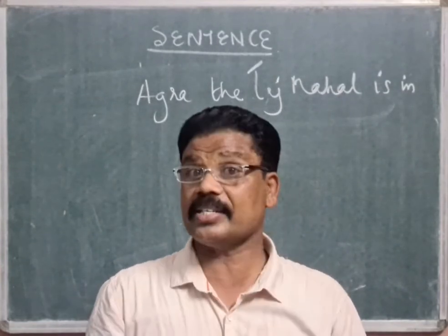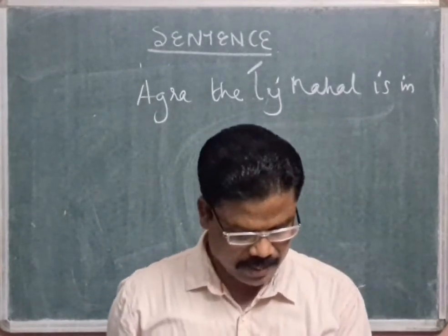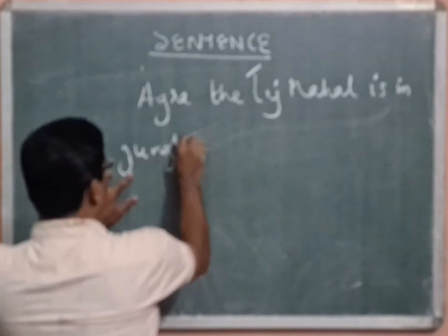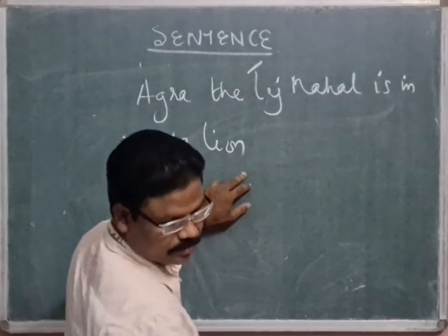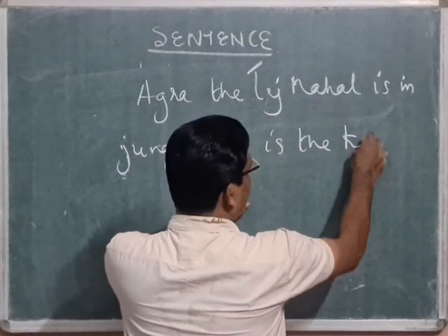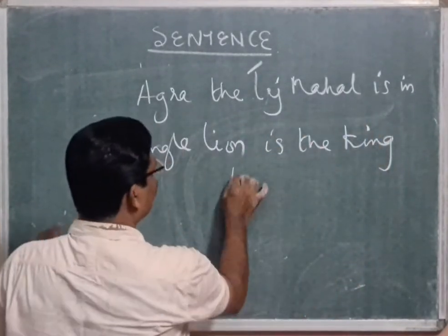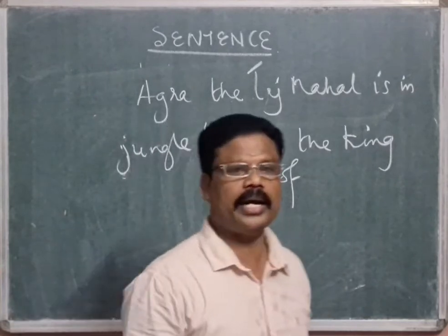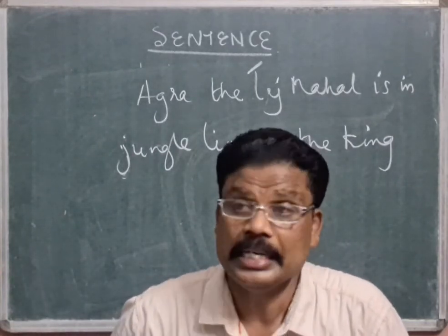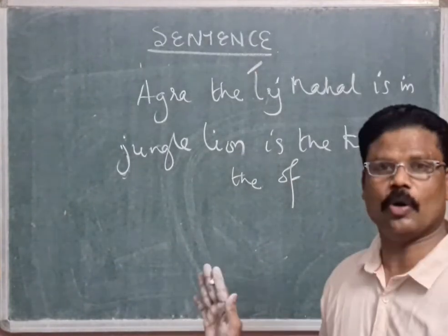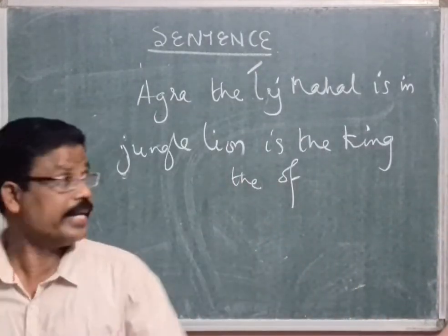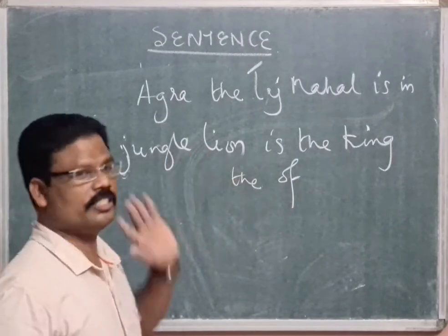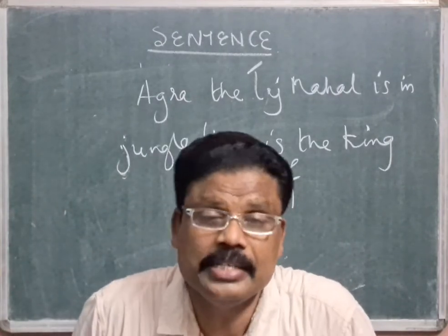Sentence is a group of words which makes a complete sense. For example, 'jungle lion is the' — is that a group of words? Yes. Does it make a complete sense? No. But 'The lion is the king of the jungle' — does it make a complete sense? Yes. So 'The lion is the king of the jungle' is a sentence.